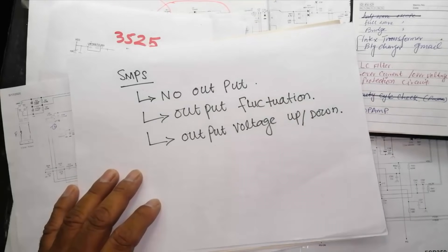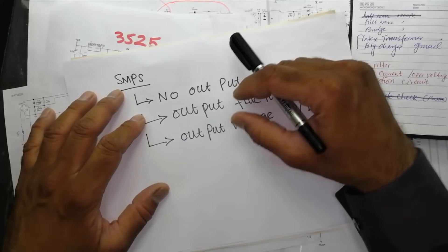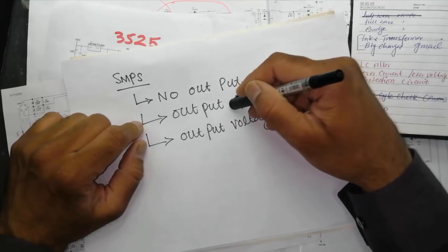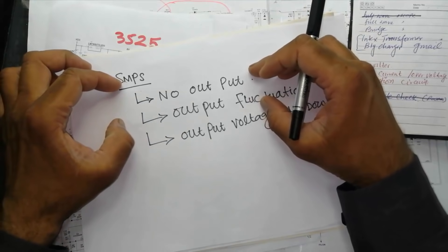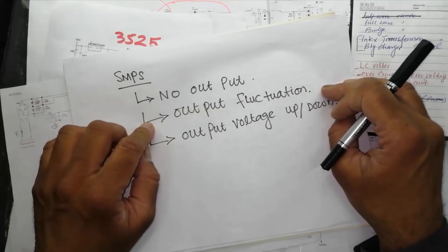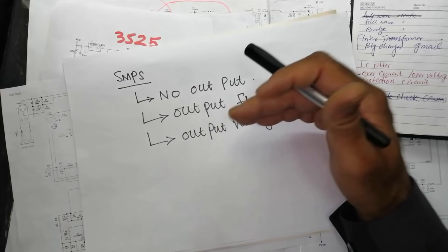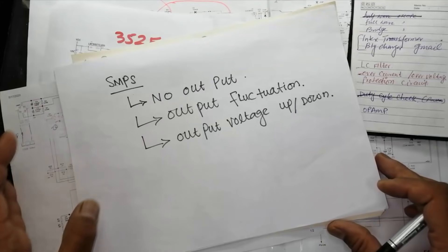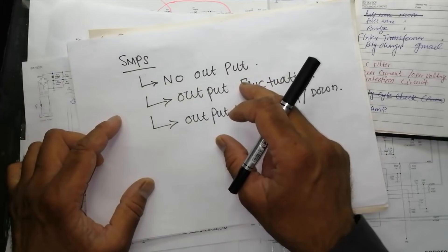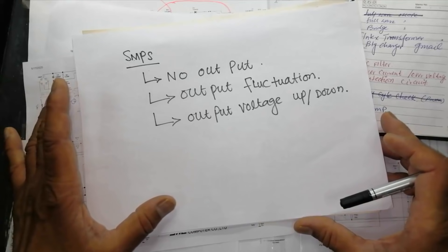Assalamualaikum warahmatullahi wabarakatuhu, welcome to Haseeva Electronics. Every day I receive many messages on my WhatsApp, many messages on my Facebook, in the comments. We have problems in SMPS — SMPS has no output, SMPS has fluctuation, the voltage is above or below, the voltage is varying. We will see what is the basics of this issue and how we can overcome this problem.